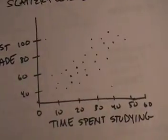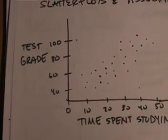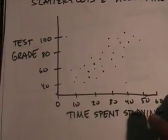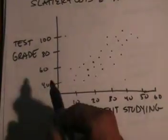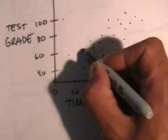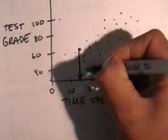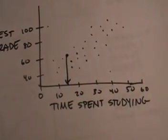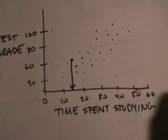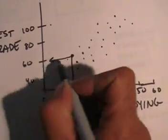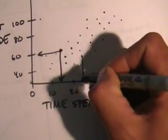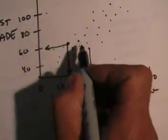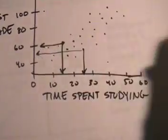Let's talk about what a scatter plot actually means for those of you who haven't made one. Every point here has two data values — they're all ordered pairs. Each point has a time spent studying and a test grade. For instance, this point right here looks like this person spent about 15 minutes studying and they scored about a 60. And this person here spent about 25 minutes studying and scored about a 50.